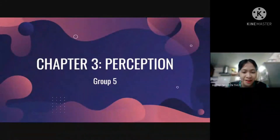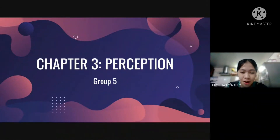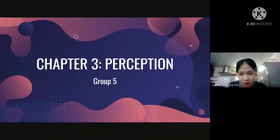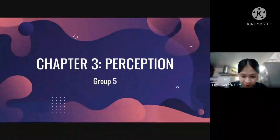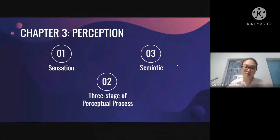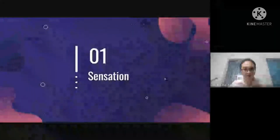Good morning everyone, we are group number five. Welcome to our presentation. We are going to present chapters three and four. Our group has six members including Thuy Huynh, Huynh Mai, Anh Thu, Phuong Anh, Bich Xuan, and Thu Phuong. We will start with chapter three on perception, which consists of three parts: sensation, stages of perceptual process, and semiotics. My name is Phuong Anh and I will talk about part one: sensation.